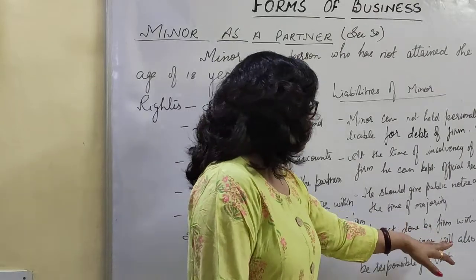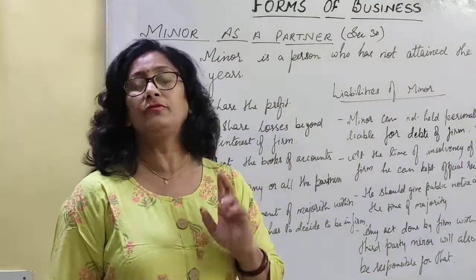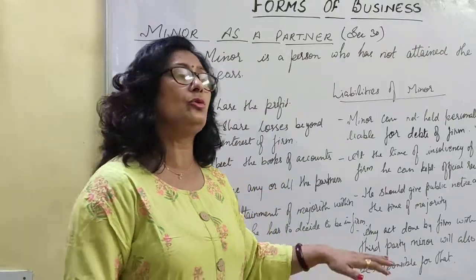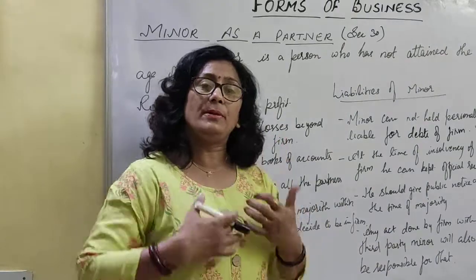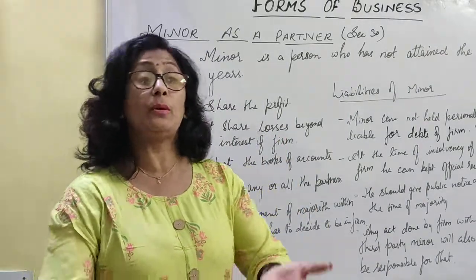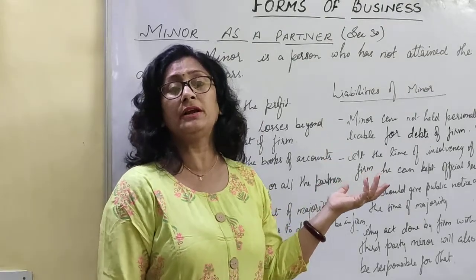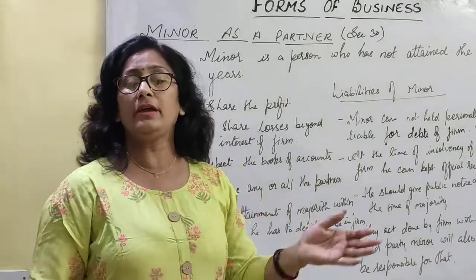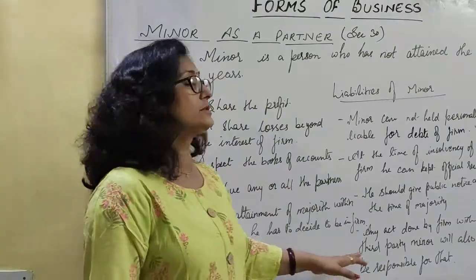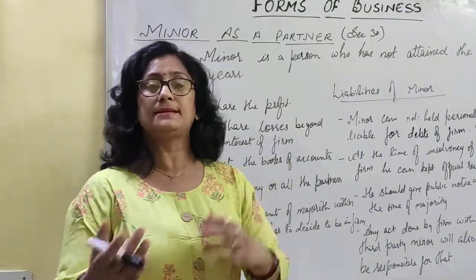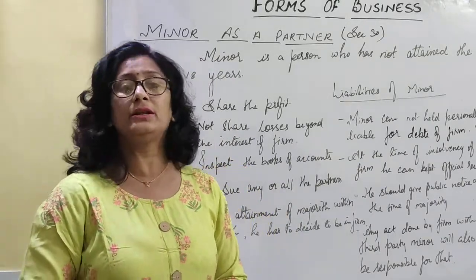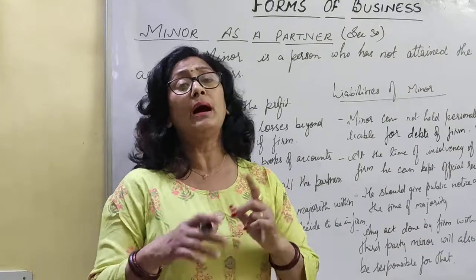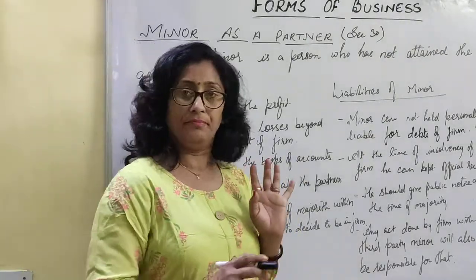Any act done by the firm with a third party — the minor will also be responsible for that. Dekho, minor partner hota hai kisi bhi firm ka, toh agar koi bhi contract hota hai third party se, aap wahan profit gain karte ho — definitely minor share karega. Aur agar losses share karte ho beyond the extent, toh woh losses baaki other partners share karte hain. Third party ke contract hone se, failure hone se, success hone se, gain hone se — definitely minor ka bhi lena dena hota hai, because in the partnership deed it is mentioned that the minor is also a partner of the firm.